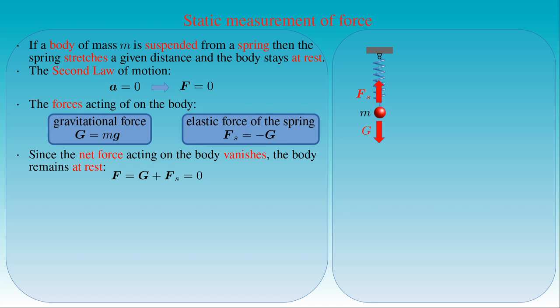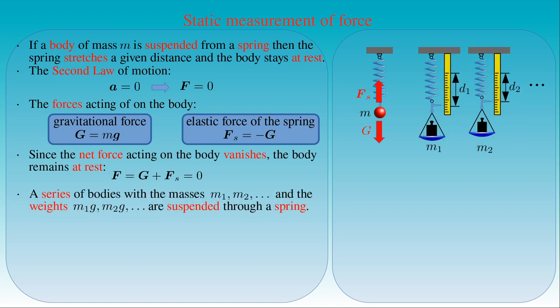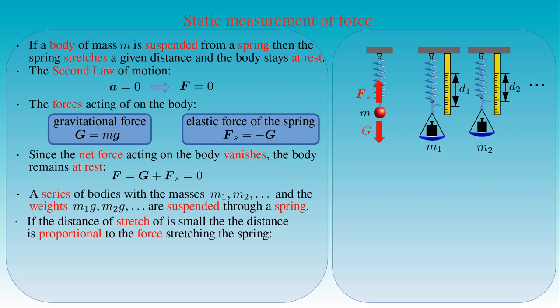Therefore, the net force F equals the weight G plus the force fs exerted by the spring, which gives zero. Since the net force vanishes, the forces acting on the body are in balance and the body remains at rest. We can study this balance by applying a series of bodies with masses m1, m2, and so forth, which have weights m1g, m2g, and so forth. If we suspend these bodies from the spring, the greater the weight of the body, the greater the distance the spring stretches — denoted d1, d2, and so forth. If the distance the spring stretches remains small, then the distance is proportional to the force stretching the spring.